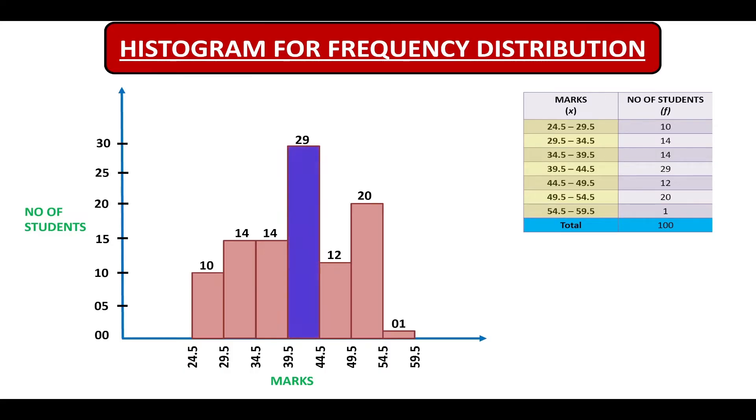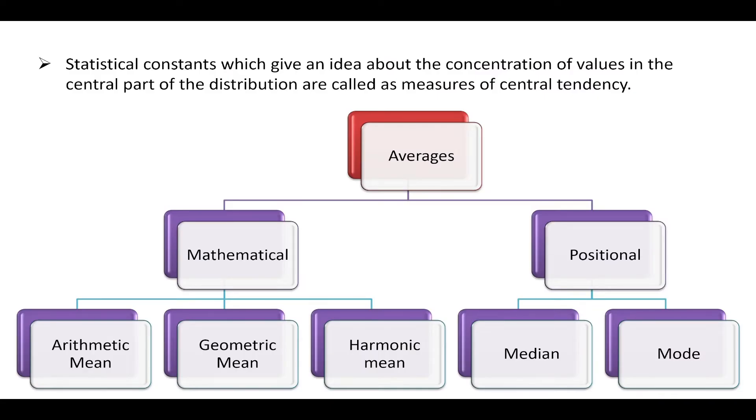This brings us to the definition of measure of central tendency. Statistical constants which give an idea about the concentration of values in the central part of the distribution are called as measures of central tendency.